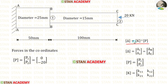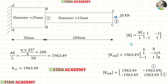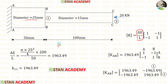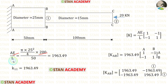Now we are going to find the stiffness matrix. First we must find the element stiffness matrix for all bars. Let us make the element stiffness matrix for bar AA–BB. We calculate AE upon L: the diameter is 25 mm, so the area is pi times D squared over 4, with D equal to 25. Young's modulus E is 200 and L is 50. This gives AE/L equal to 1963.49. Applying that and multiplying inside the matrix, we obtain the element stiffness matrix for bar AB.